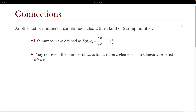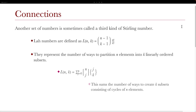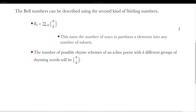One reason the Stirling numbers are interesting is that they have connections from all over the place. In fact, there's another set of numbers sometimes called a third kind of Stirling number: Lah numbers. Lah numbers are defined as L(n,k) equal to the binomial of (n−1, k−1) times n factorial over k factorial. These represent the number of ways to partition n elements into k linearly ordered subsets. L(n,k) can be written in terms of both kinds of Stirling numbers: L(n,k) equals the sum from j=0 to n of [n cycle j] times {j cycle k}. Putting elements into cycles guarantees a linear ordering.